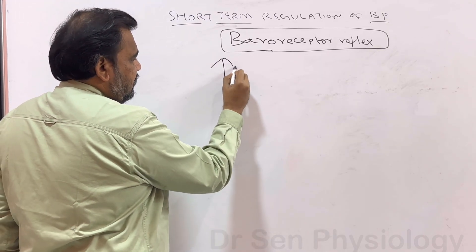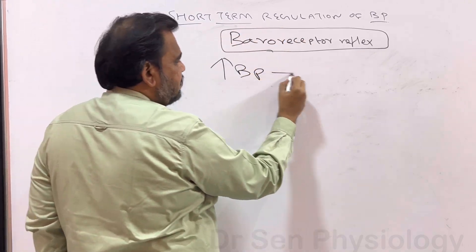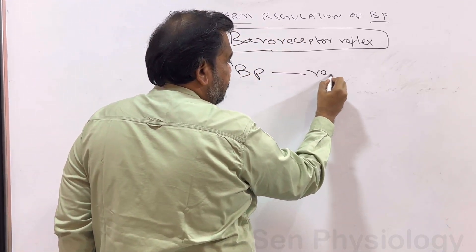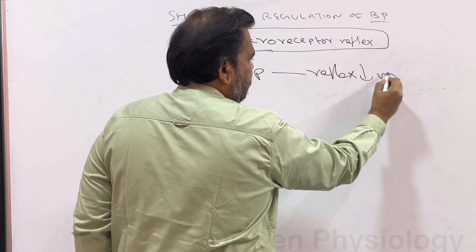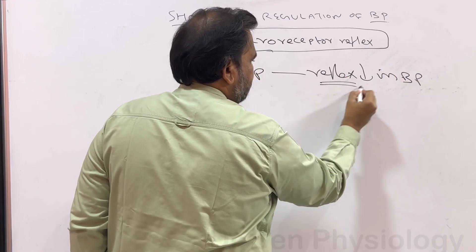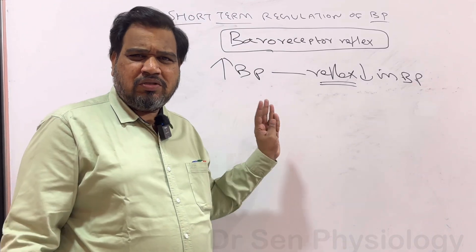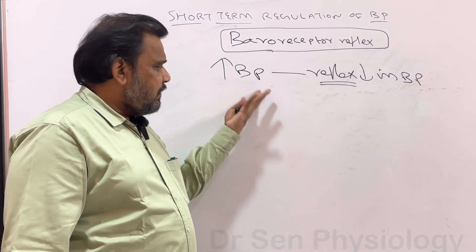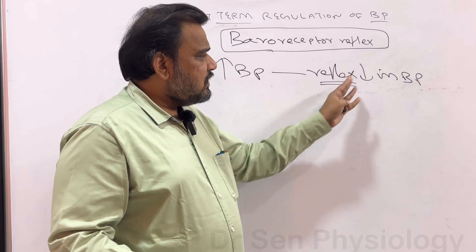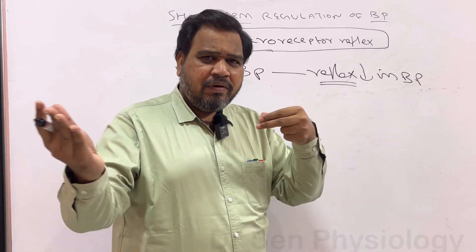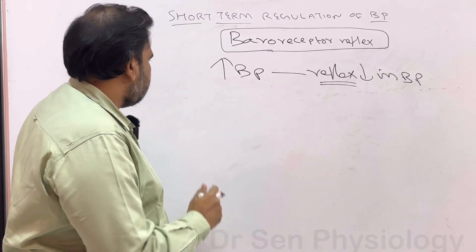Whenever there is an increase in blood pressure, the baroreceptor reflex is going to act, causing a reflex decrease in blood pressure. That is why it is called the baroreceptor reflex. It is homeostasis — when BP is increasing, some reflex is happening which causes a decrease in BP, trying to bring the blood pressure back to normal.